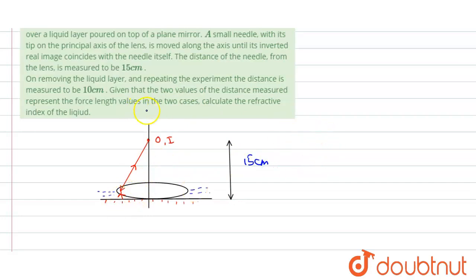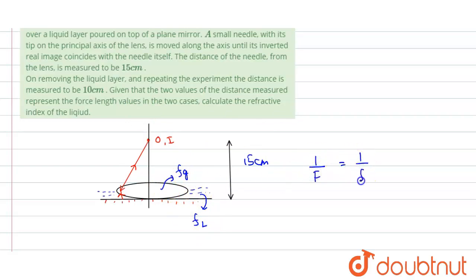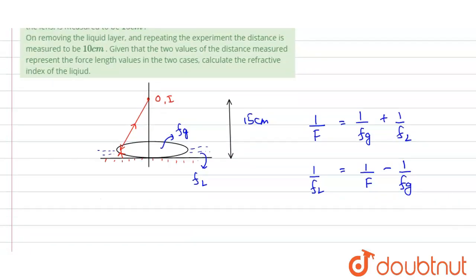We denote the focal length of the glass lens as F_G and for the liquid as F_L. The combined focal length gives us: 1/F = 1/F_G + 1/F_L, or rearranging, 1/F_L = 1/F − 1/F_G, where G refers to the glass lens.